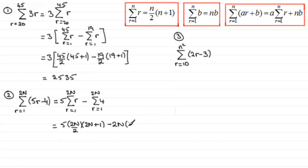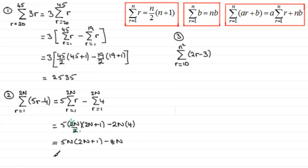For the constant sum, instead of n times b it's 2n times b, so we get minus 2n × 4, which is minus 8n. The two 2's in the first term cancel, leaving 5n × (2n + 1) minus 8n. Expanding the bracket gives 10n² + 5n − 8n, which simplifies to 10n² − 3n.